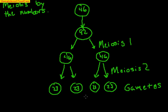And that is how meiosis is by the numbers, taking a 46 cell, going all the way down to a 23 chromosome gamete, which is a sperm or egg. Hope you found this helpful, and have a great day.